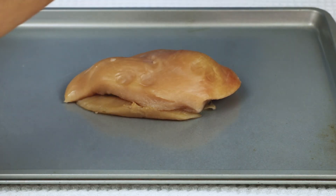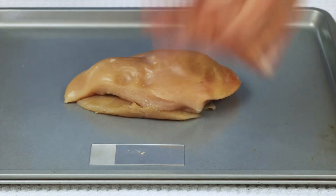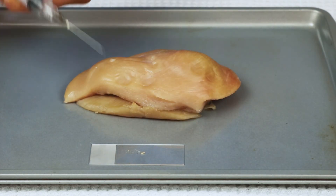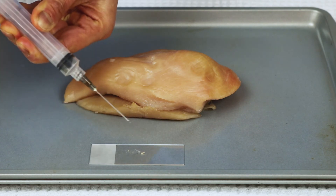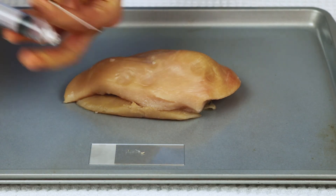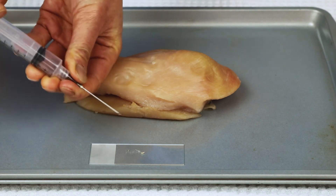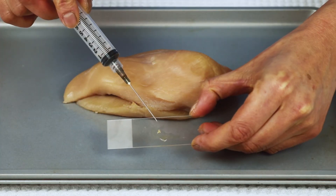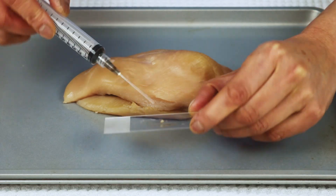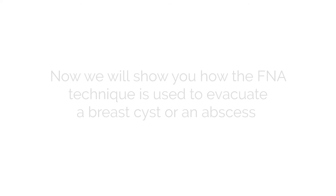Once that is done, the material will be put on a slide. Here there are small pieces of olives — these represent the biopsy sample — and they are going to be sent to pathology.